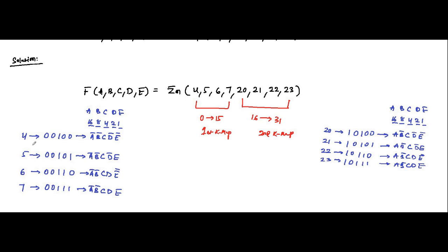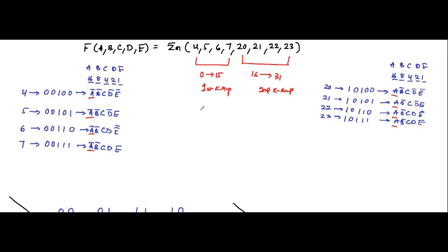In the first set of values from 4 to 7, which lie in the range 0 to 15, we have A-bar common in the MSB position for all of them. In the second set, which falls in the range 16 to 31, we have A common in the MSB position. So we will split the two functions: in the first KMAP, taking A-bar common to form a function of 4 variables B, C, D, E; and in the second KMAP, taking A common for the same 4 variables B, C, D, E, then minimize them.